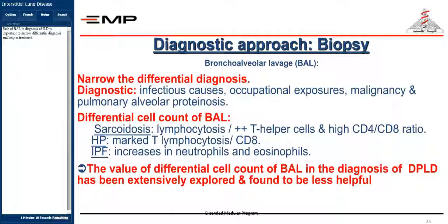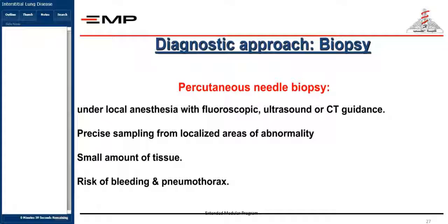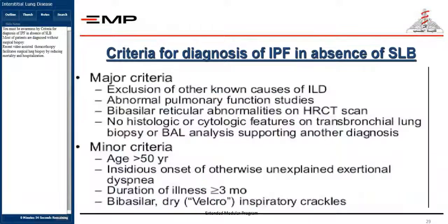Pulmonary functions are important in diagnosis, treatment, and follow-up. They include normal spirometry, DLCO, and arterial blood gases. Pulmonary functions reveal a restriction pattern or mixed pattern in some diseases. The role of BAL in diagnosis of ILD is important to narrow the differential diagnosis and help in treatment. The diagnostic approach also includes biopsy — surgical lung biopsy is not commonly used and is a last step.